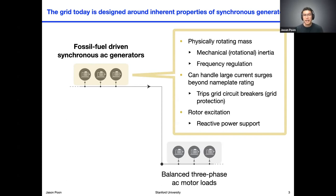Similarly, a large rotating generator provides a very natural means of doing frequency regulation — if the grid is drawing too much power, the frequency of rotation will slow from its rated speed, some multiple of 60 hertz in the United States. That slowing of the machine is a natural signal to the operator that more power needs to be introduced. Secondly, these generators can handle large surge currents beyond their nameplate rating — typically about 5 to 7x for very brief periods.